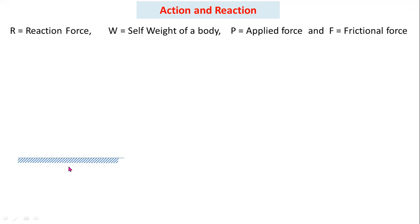This is a rough horizontal support. For smooth surfaces, you have to consider zero friction. For rough surfaces, you have to consider friction opposite to the direction of motion of the block.